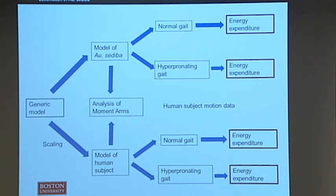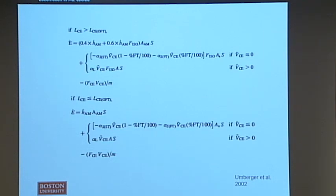After all of this was done, we calculated energy expenditure for normal gait and hyperpronating gait using a specific equation designed for measuring energy expenditure in this type of model.